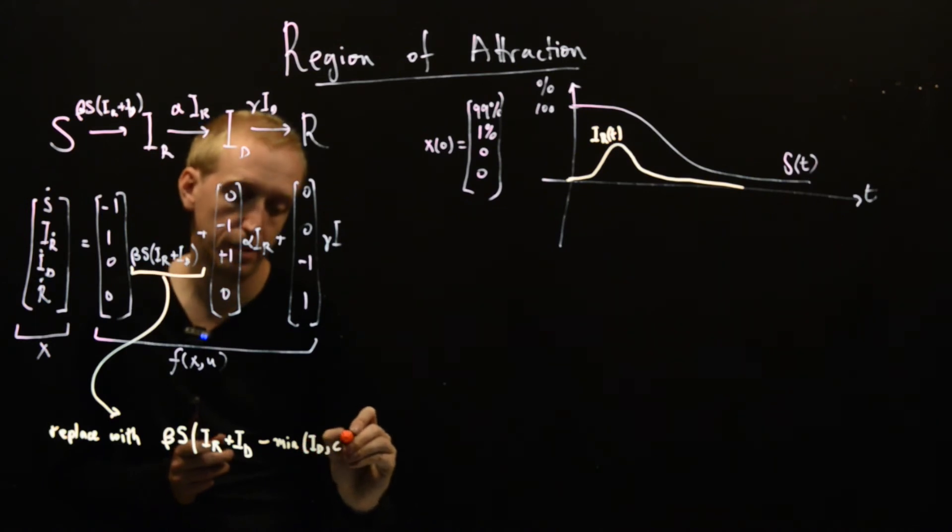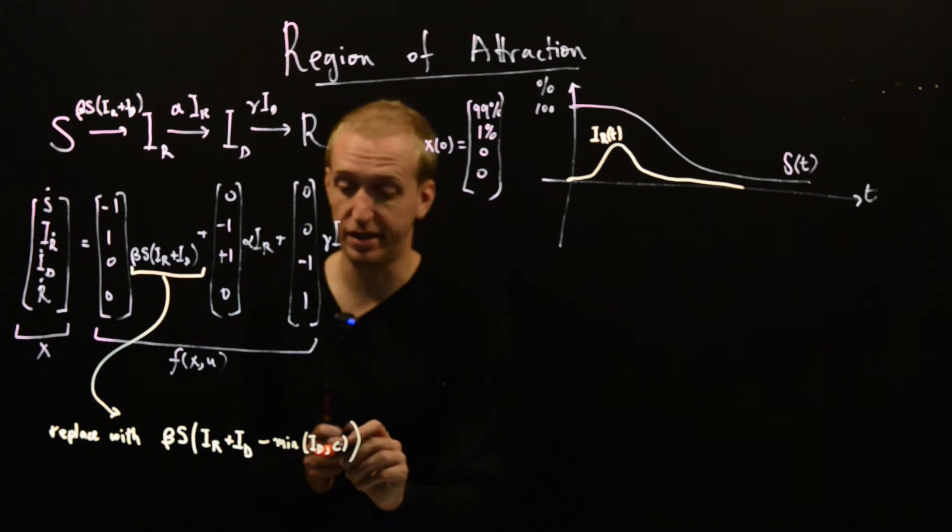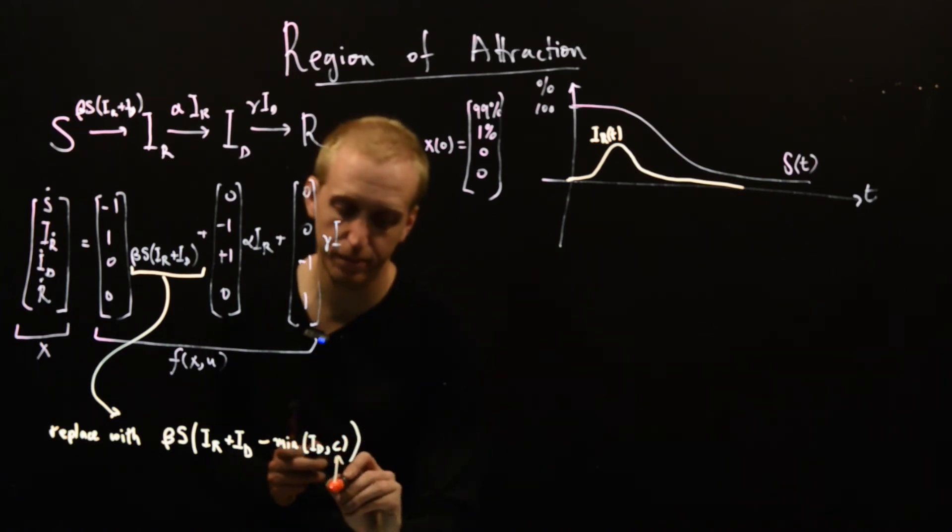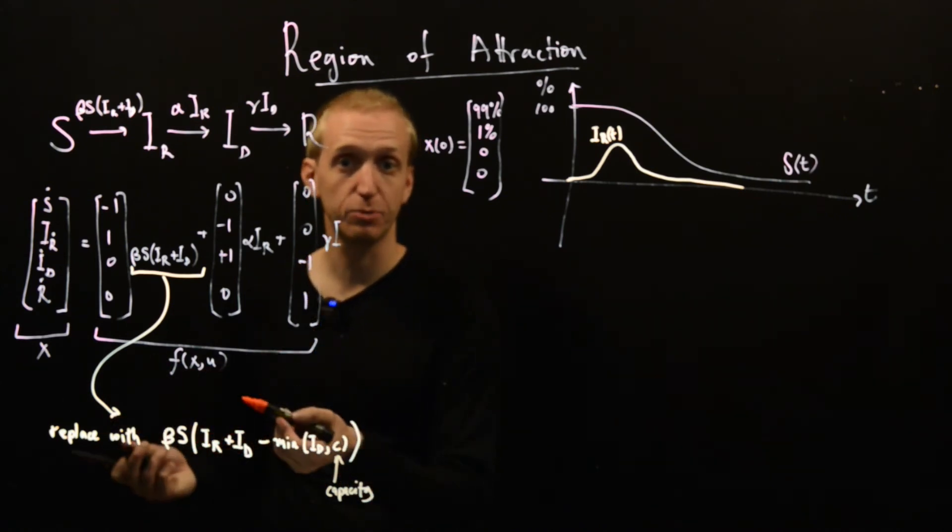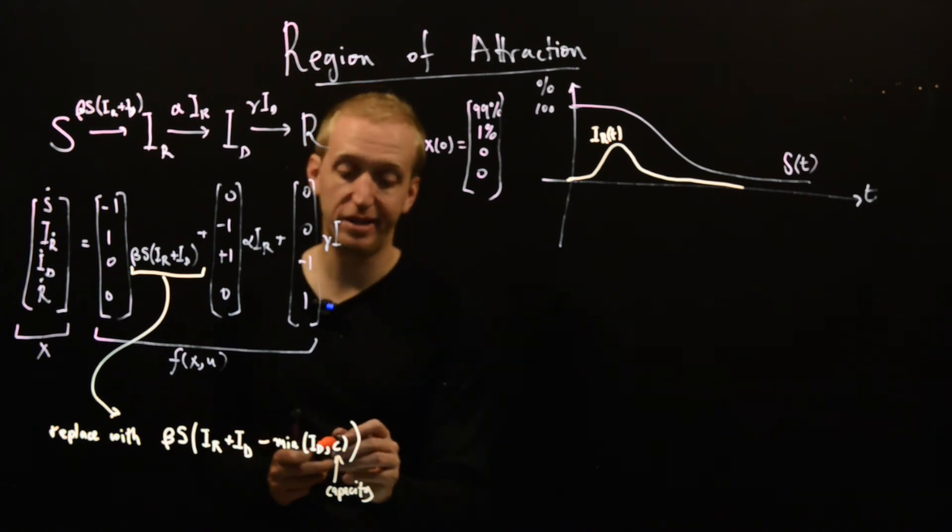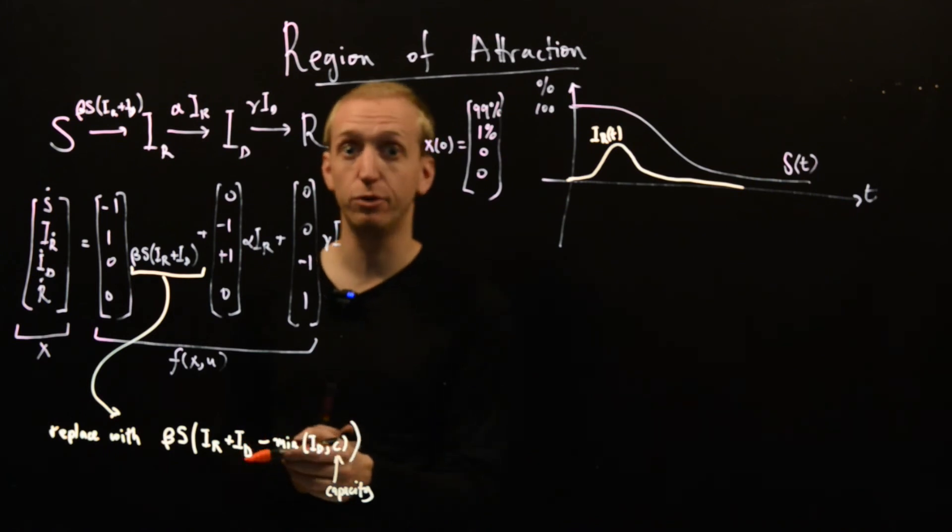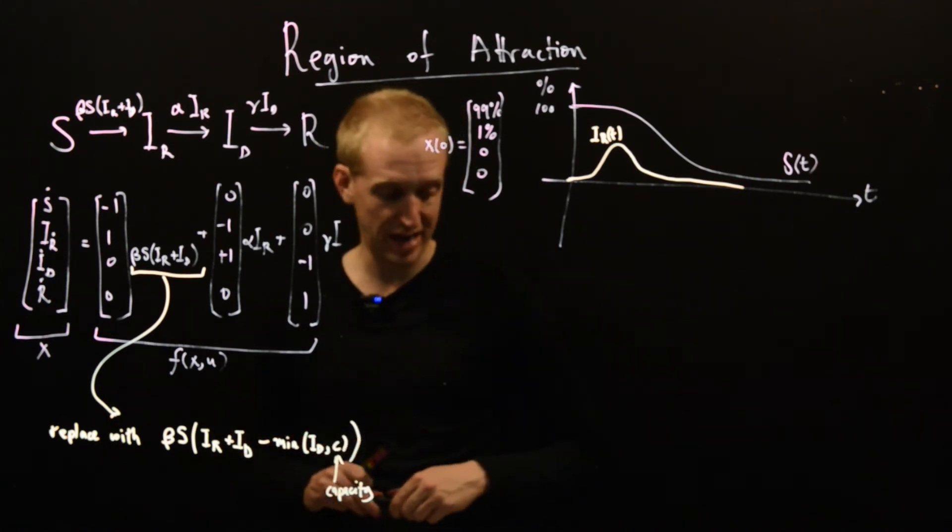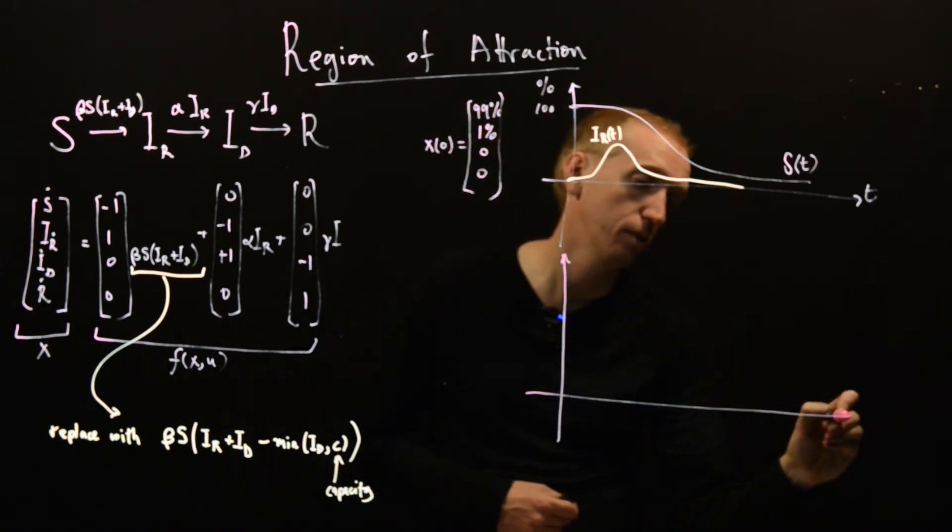So a very naive and probably unrealistic way to model test and trace would be to put a minus min(ID, C) in here. So what does this mean? Well this min it just takes the minimum of these two numbers. So what it says is that as long as ID is less than some number C we'll subtract ID. So in words as long as we're less than our test and trace capacity, if someone is discoverable we discover them and we remove them and we stop them spreading the disease in the population. However, if ID gets bigger than our capacity, we just remove C instead. So we remove as many as we can, but that might not be all of the discoverable people out there. And this sort of would roughly capture the effect of a test and trace system where there's some capacity involved.